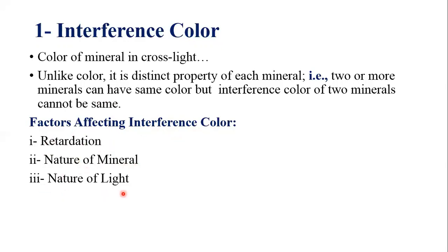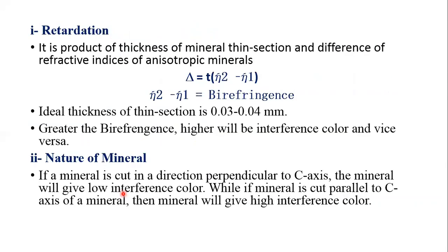What is retardation and how does it affect interference color? Retardation is the product of the thickness of a mineral section and the difference of the respective refractive indices of an anisotropic mineral. Mathematically, retardation is shown by the symbol delta. C indicates the thickness of the mineral section, while mu2 and mu1 denote the refractive indices of the anisotropic mineral. This difference of refractive indices is also called birefringence. So retardation is defined as the product of birefringence and thickness of the mineral section.